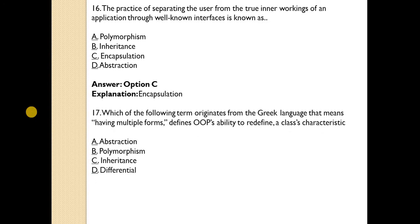Which of the following term originates from the Greek language, means having multiple forms, and defines OOP's ability to redefine a class characteristic? Answer is B, polymorphism. Polymorphism means having multiple forms.